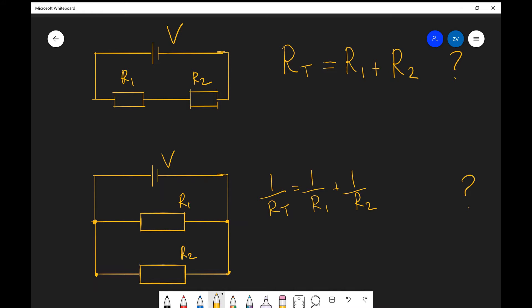So let's start off with the first one. If we have two resistors R1 and R2 which are connected in series to a cell of potential difference V, how can we prove that R total, the total for this circuit, is equal to R1 plus R2?